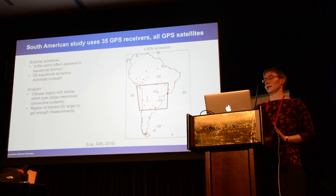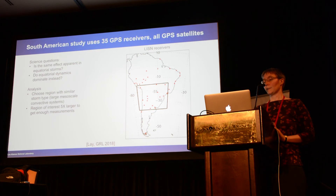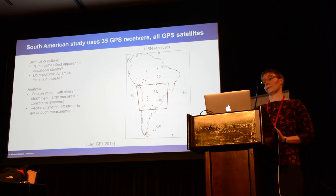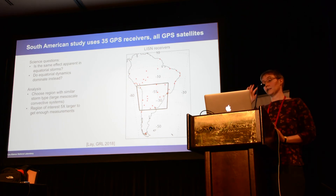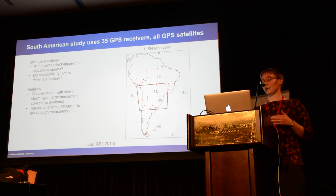That was the mid-latitude study, which is somewhat simpler because the ionosphere is relatively simple at mid-latitudes. I then turned to the question of lower latitudes, which have much more complicated electrodynamics due to magnetic field orientation. The key question is: is the same effect apparent in equatorial storms, or do other processes dominate?